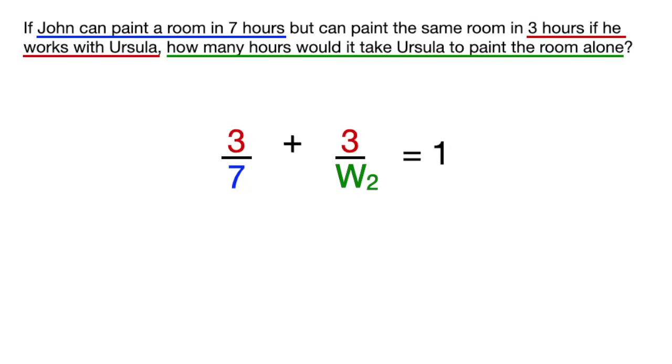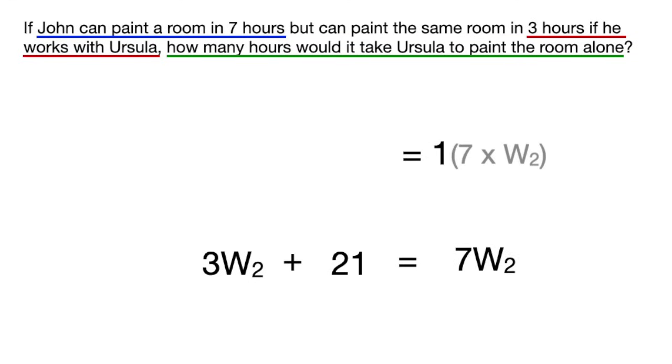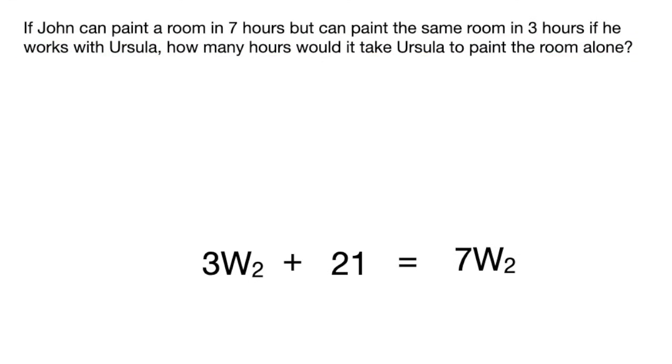And I'm going to simplify the equation the same way I did before by combining the denominators and multiplying them to everything in the equation, canceling out as much as I can to end up with 3w plus 21 equals 7w.